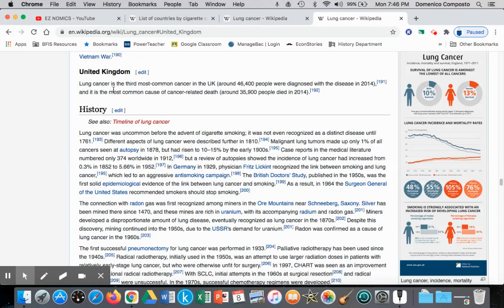So lung cancer we see in the United Kingdom is the third most common cancer in the UK. And remember, this is a type of cancer that can be avoided. If we can reduce smoking, we can reduce the amount of lung cancer, and thus reduce the number of cases and reduce the amount of public tax revenue spent through the public health system to treat these individuals. And that's an opportunity cost. Those funds could be used for something else within society.